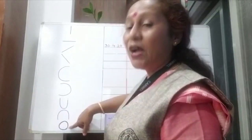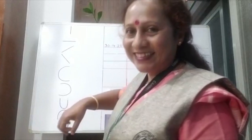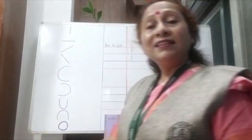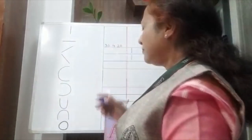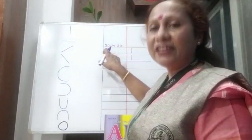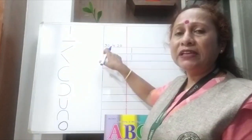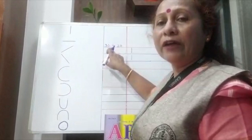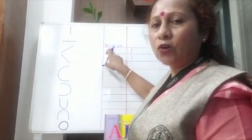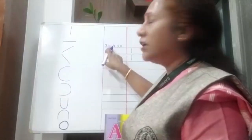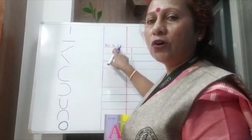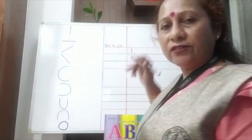This is a circle — O or 0. Girls, take out your English classwork copy and open your first page. Open your first page and write down today's date. I had already written the date here; you have to follow this. In the corner, you have to write down the date. Today's date is 30.4.2020. Now start writing.